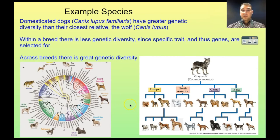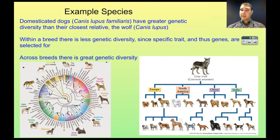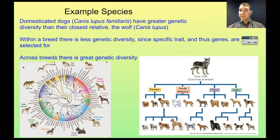An example species with high genetic diversity is the domesticated dog, Canis lupus familiaris. They have greater genetic diversity than their closest relative, the wolf, Canis lupus. Domestic dogs are a subspecies of wolves. Within a single breed there is very low genetic diversity, because breeders select specific traits — for example the French Bulldog has quite similar genes across the breed. But comparing all dog breeds together, plus mongrels or town dogs who haven't been selected into a particular breed, there is really great genetic diversity. Because of that great genetic diversity, dogs are very successful in many different environments all over the earth.